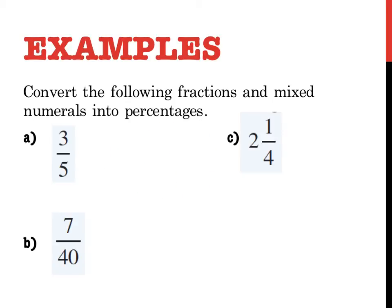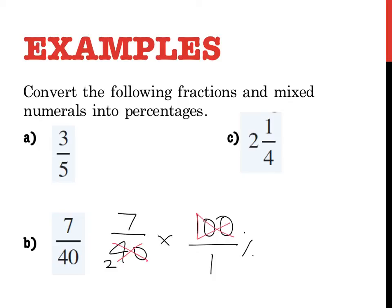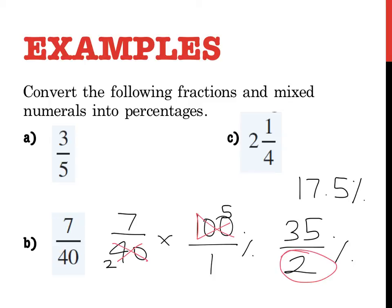Let's look at 7 over 40. So 7 over 40 times 100%. Let's see if I can cross-simplify. Yes, I can. 20 goes into 40 twice and into 100 five times. So 7 times 5 is 35, and 2 times 1 is 2. That gives me 35 over 2. What's 35 divided by 2? That's 17.5%. It's really important to pay attention to whatever comes out on the bottom, because that tells you what to divide the top number by. So 7 over 40 is the same as 17.5%.